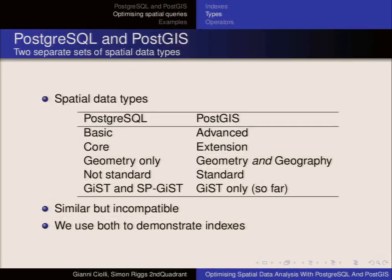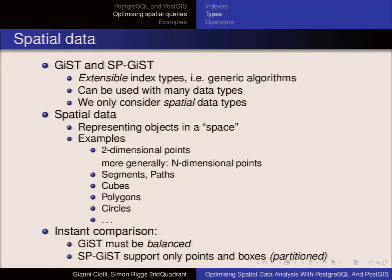We will use both data types because we want to demonstrate how indexes work. The goal of this talk is not just to discuss concepts but to show explicit examples where indexes help in optimizing queries. What is spatial data? You've got two-dimensional points, segments, polygons, and all kinds of shapes. The idea is that you can represent even three-dimensional shapes, though a talk this morning covered 3D features in PostGIS — we won't cover 3D here, just 2D.